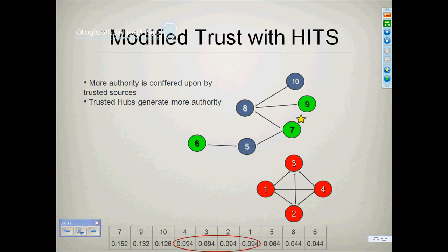And so you can see that in this case, with the Modified Trust with HITS, this is Modified Trust with HITS, where you can see that the spam pages still get some authority, but quite a bit lower than the good pages.